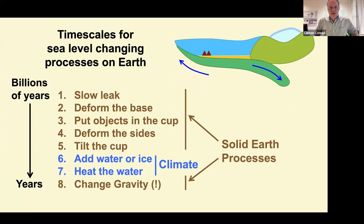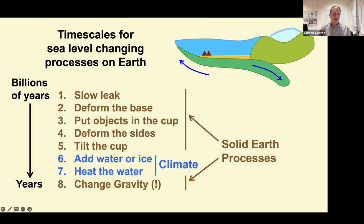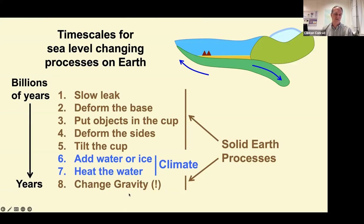If we look at the geological analogies for these different mechanisms, we can rank them in terms of the timescale over which they happen. The slowest ones, like the slow leak, happen on a billions-of-years timescale — the age of the earth. The fastest ones are relevant to timescales of just years, so modern day climate change is relevant to some of these. I've highlighted the ones that have solid earth processes associated with them, and those are the ones I'll really focus on today.